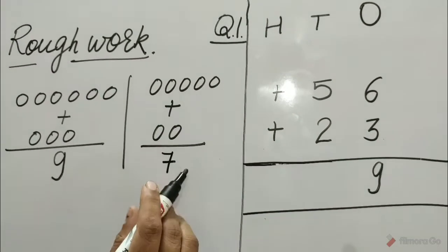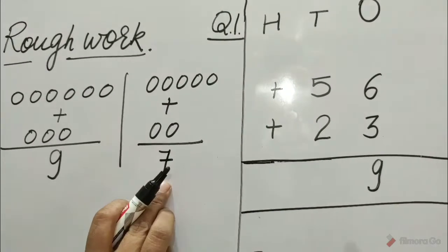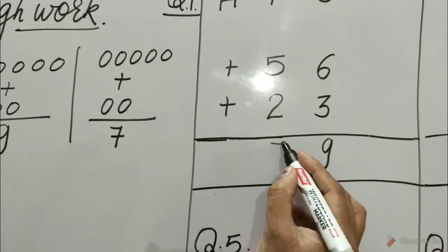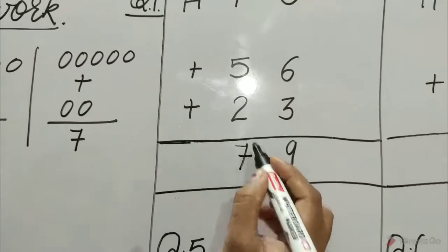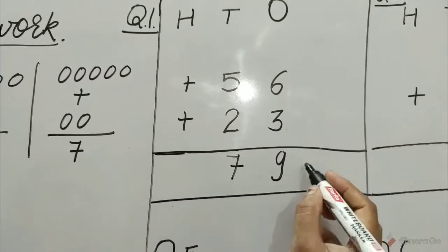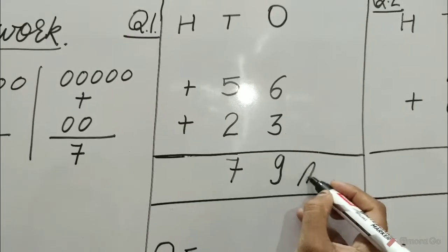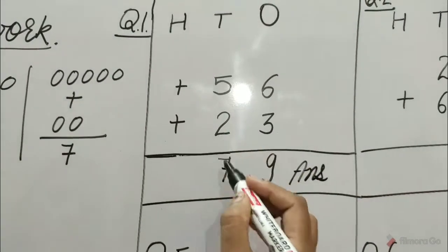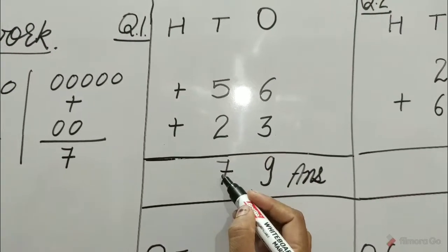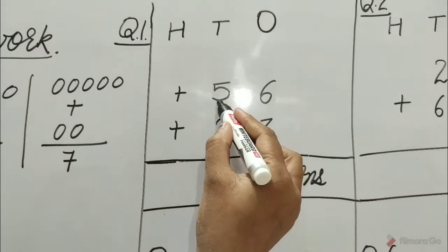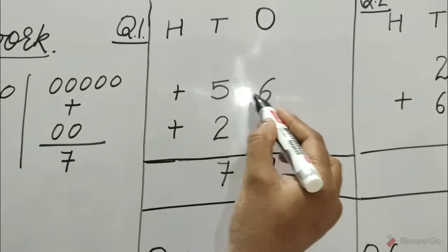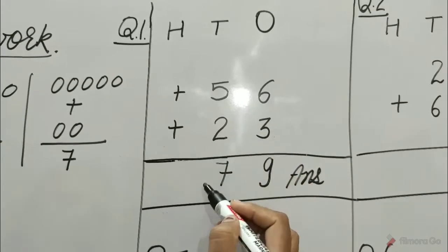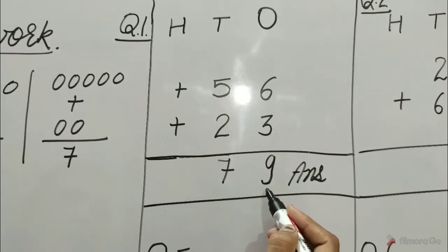Total number of circles are 7 tens. Write down 7 under tens. Hence, 56 plus 23 is equal to 79.